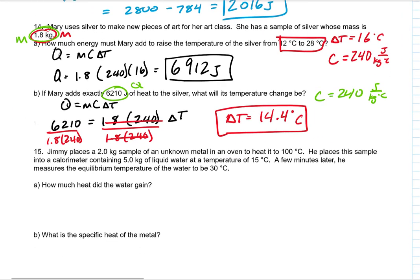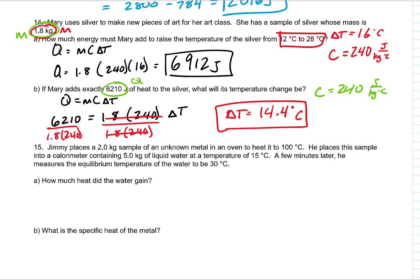Jimmy heats a sample of metal to 100 degrees Celsius. He puts it into a calorimeter containing water at 15 degrees. A few minutes later, he measures the equilibrium temperature of the water to be 30 degrees. That is the mass of our sample. That's the mass of our water. Delta T for the sample, he goes from 100 to 30, that's negative 70 degrees Celsius. Delta T for the water, we go from 15 to 30, is plus 15 degrees Celsius. The other thing that we need is the specific heat of water, 4,186 joules per kilogram degree Celsius.